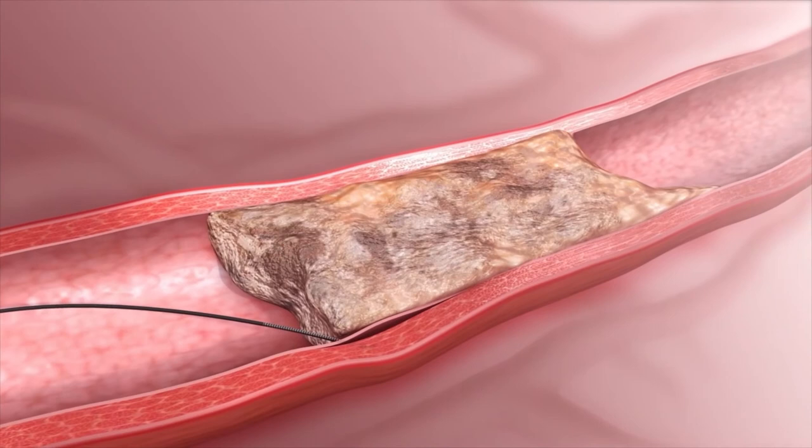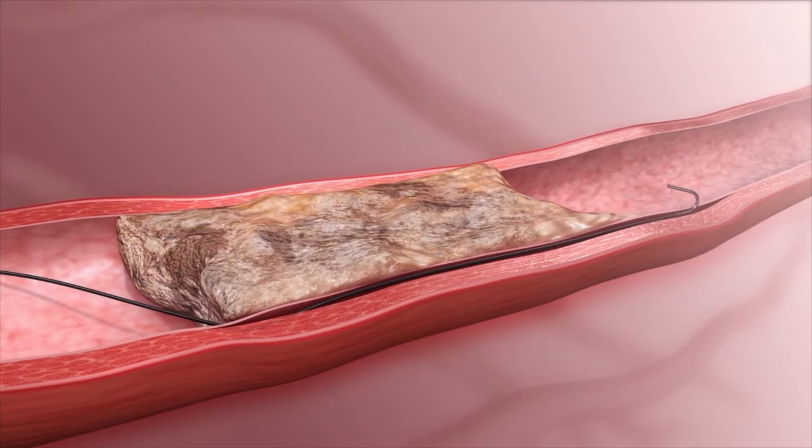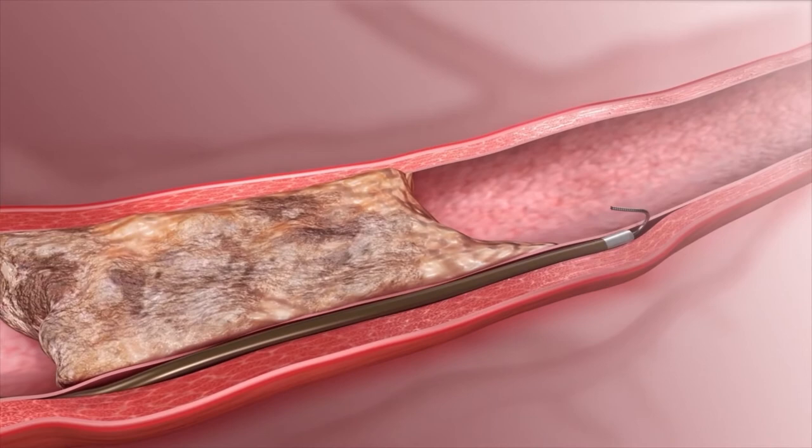When tracking within the sub-intimal space, the BBAC offers the ultimate solution for re-entering the true lumen. Bring the tip of the BBAC catheter to the optimal location where you want to enter the blood vessel.